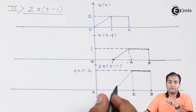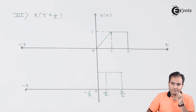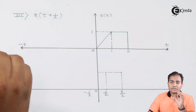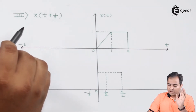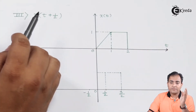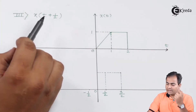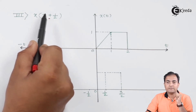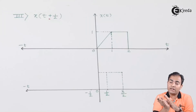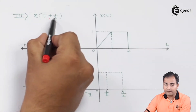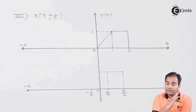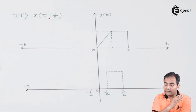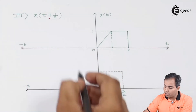Now the third sub-question is x(t + 1/2). This is based on the time shifting property. For a negative sign the graph is shifted towards the right by the given value — that is delay. In this question, a plus sign is given, which means the graph will be shifted towards the left-hand side by the given value. The given value is 1/2, so the graph shifts left by 1/2. The zero instance will move to minus 1/2.